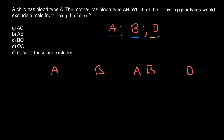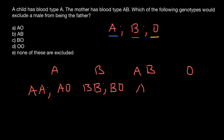Blood group A is made by two genotypes: AA and AO. Blood group B is made by two genotypes: BB and BO. Blood group AB is made by only one genotype: AB. And blood group O is also made by one genotype: OO. So we have six genotypes that make four blood groups.